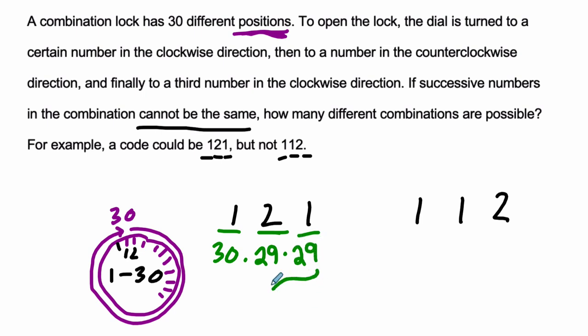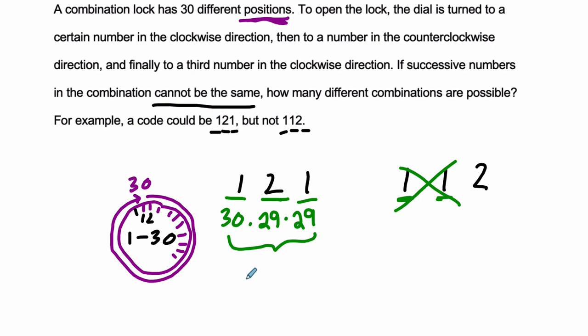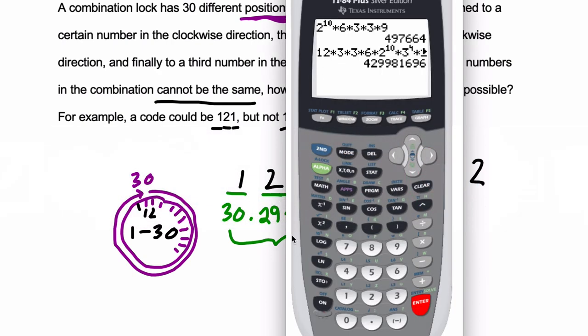And this will give us the total number of permutations. The only rule is that two numbers in a row, this can't happen, right, you can't have two numbers in a row be the same number. So it's 30 times 29 times 29, we'll calculate that and then we're done.